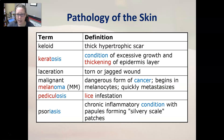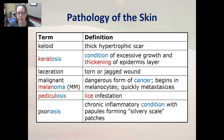A keloid is a thick hypertrophic scar; some people create them on purpose as decoration by scarring themselves in certain shapes. Keratosis is a condition of excessive growth and thickening of the epidermis layer. A laceration is a torn or jagged wound. A malignant melanoma is a dangerous form of skin cancer that begins in the melanocytes and quickly metastasizes and spreads to the rest of the body.